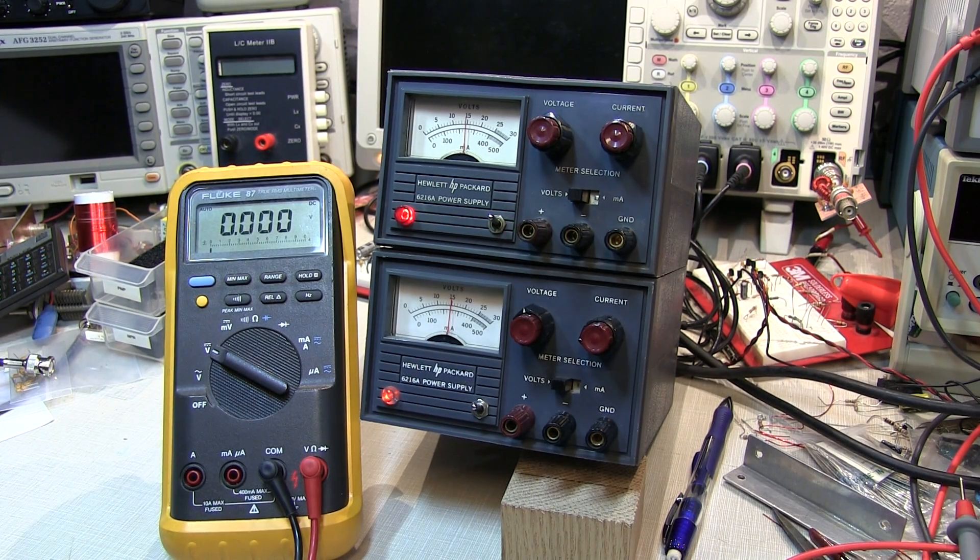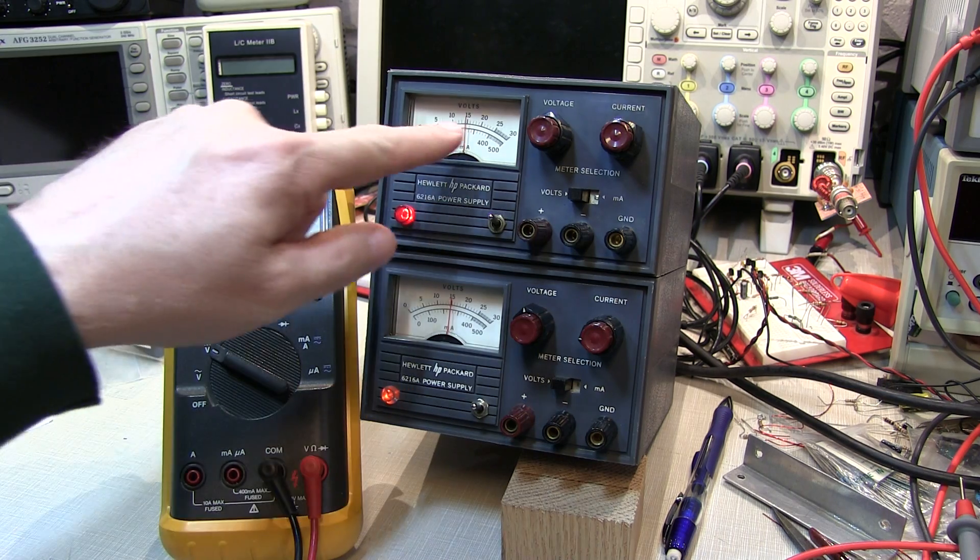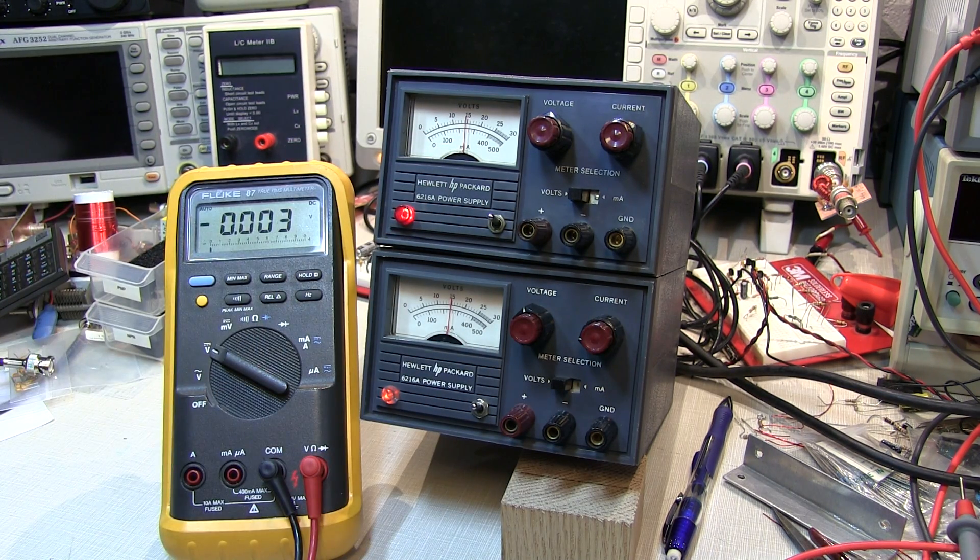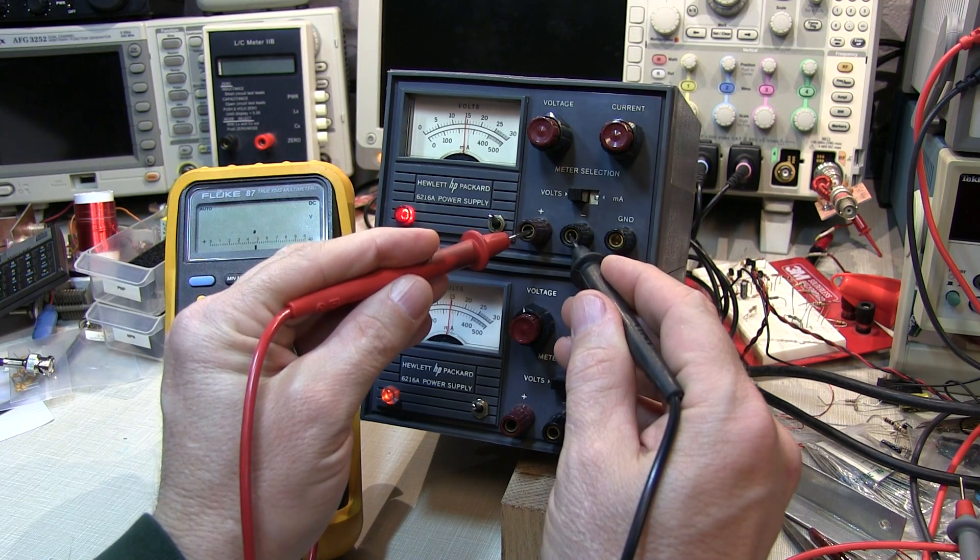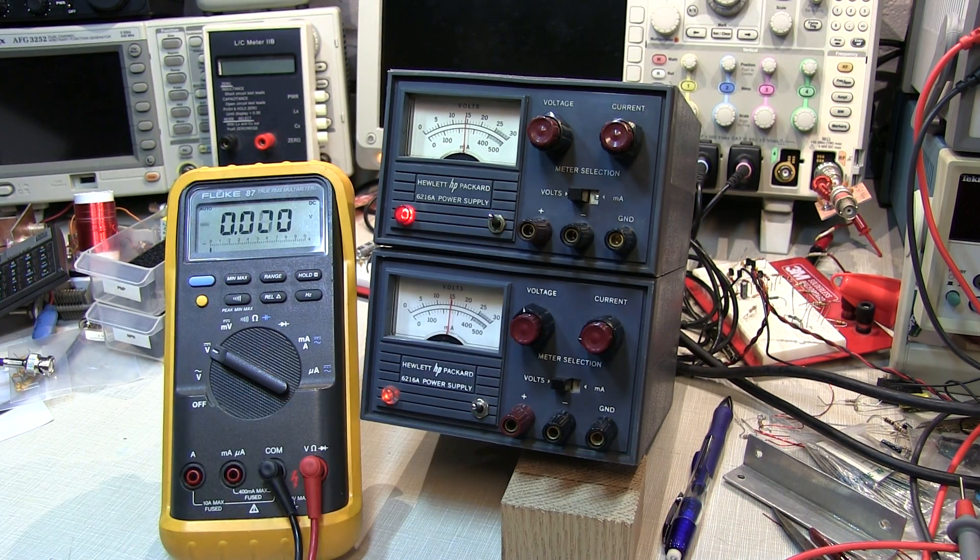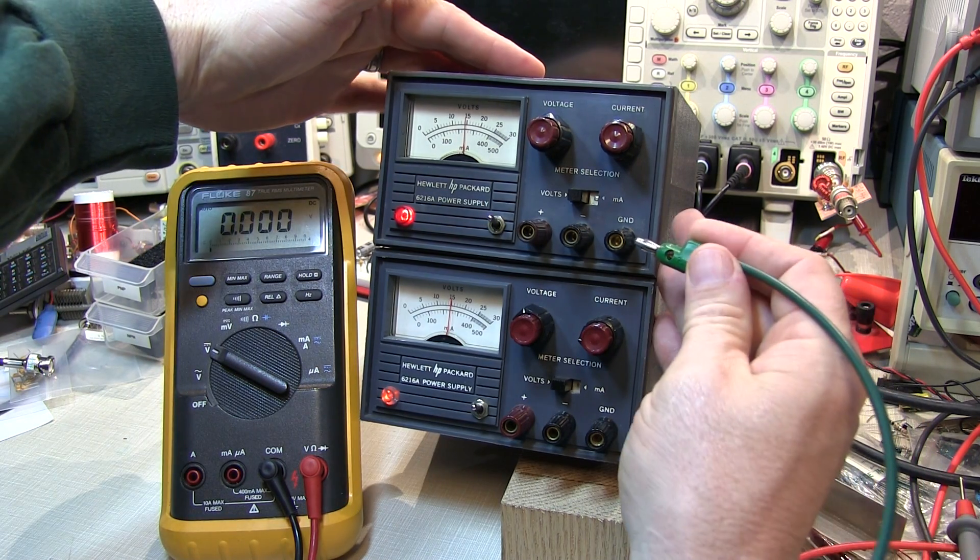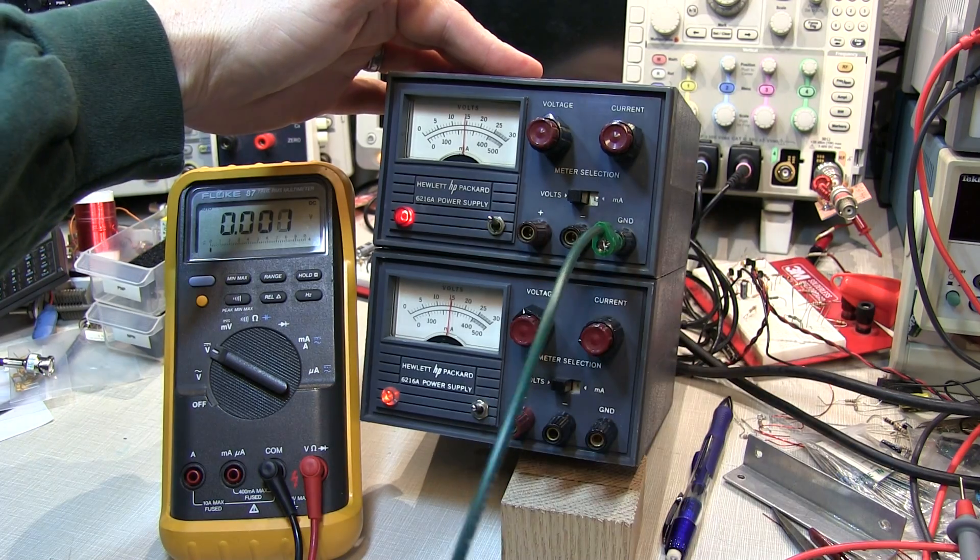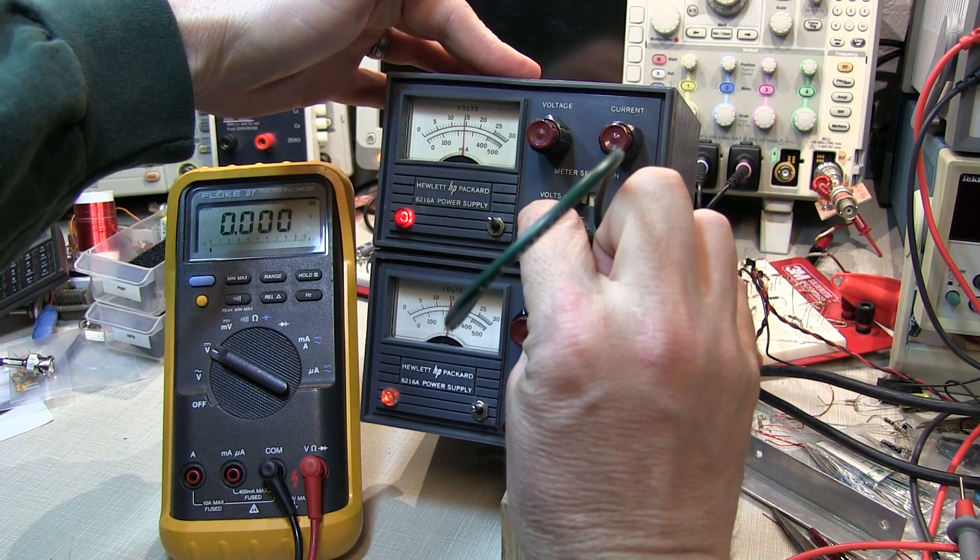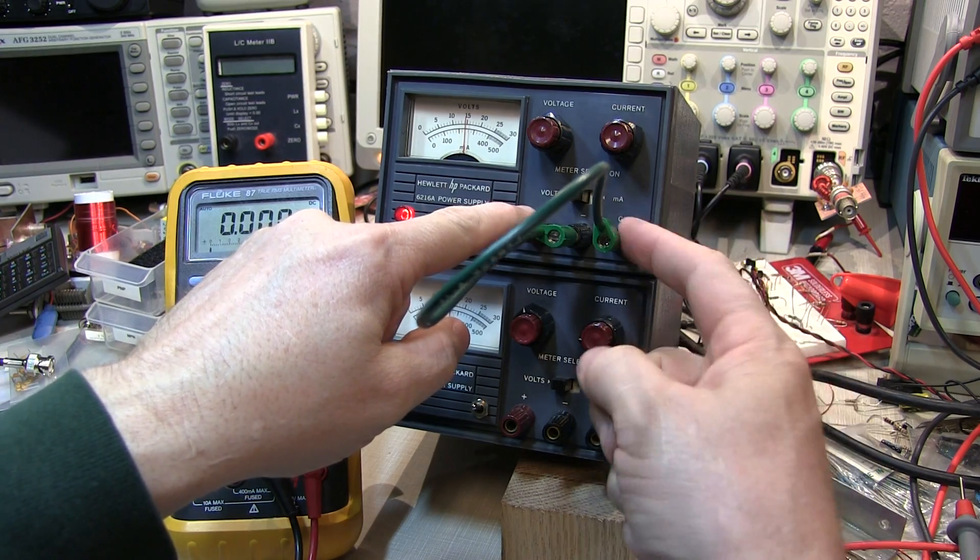So let's say the circuit you're working on calls for a plus and minus 15 volt power supply, and this is very common with older op amp circuits. How would we set this up? We'd set both power supplies to about 15 volts. So I've got my 15 volts between the positive and negative terminals of each power supply. We would take one power supply. Let's call this one to be the positive supply. So we'll connect its negative output to ground. So now this terminal here is going to be positive 15 volts with respect to ground.